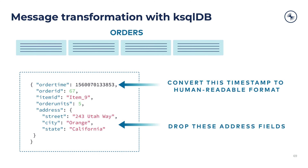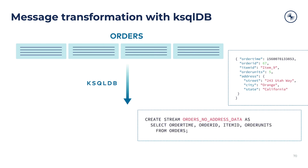ksqlDB allows us to transform our events while creating a new stream. For example, we can change a Linux timestamp to a human-readable format, or we can remove sensitive fields from the event. When creating a new stream based on an existing one, we can pick and choose which fields we want to exist in the new stream.